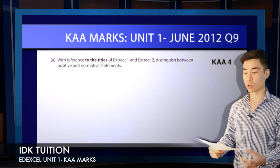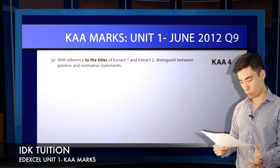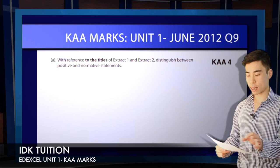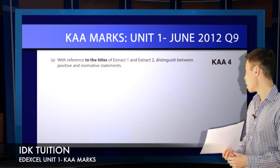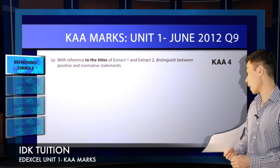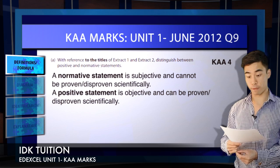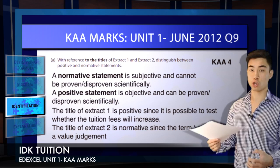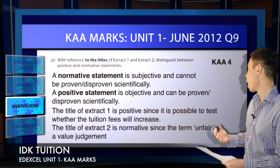Question A is a standalone KAA question for four marks. The question says 'with reference to the titles of extract one and extract two, distinguish between positive and normative statements.' Straight away you have two key terms to define — positive statements and normative statements — so give a definition for both. Then referring to the titles of those extracts gives you your identification marks to pick up the remaining two marks.